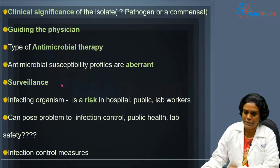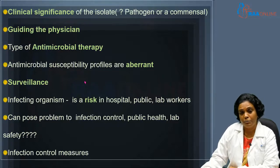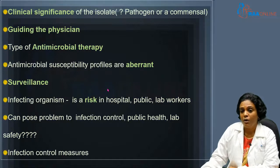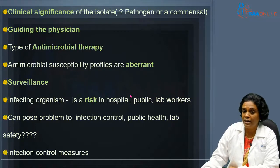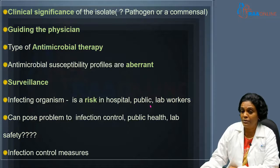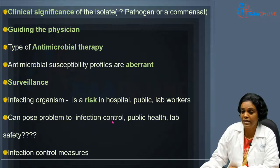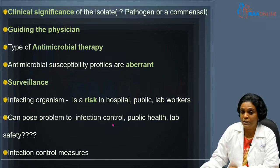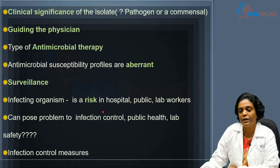Bacterial identification also helps in surveillance — to find out the incidence and prevalence rate of a particular infection in a hospital or in a community. In a hospital, you can note the prevalence of methicillin-resistant Staphylococcus aureus. In a community, you can determine the prevalence of infectious diseases like diphtheria and cholera, which helps establish infection control measures. These infecting organisms pose a risk in the hospital as well as to the public. So you can initiate infection control measures: in the case of MRSA, contact precautions; for tuberculosis, airborne precautions; for diphtheria, droplet precautions.